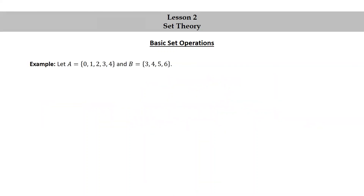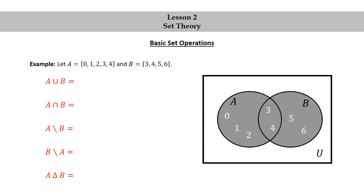Let's try an example. Let A be the set consisting of 0, 1, 2, 3, and 4, and B the set consisting of 3, 4, 5, and 6. Let's compute the union, intersection, the two differences, and the symmetric difference between A and B. First, let's look at this Venn diagram that shows where all the elements are. Notice that 0, 1, and 2 are in A but not in B. 3 and 4 are common to both A and B. And 5 and 6 are in B but not in A.